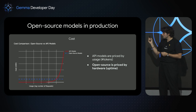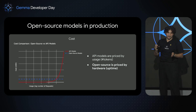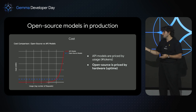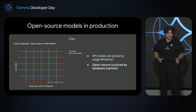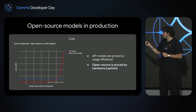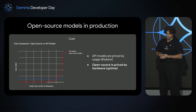On the cost side, API models are usually priced by number of tokens, while open-source models are priced by the hardware you're running the model on. So if you are having intensive usage, running your model on hardware is becoming much more cost-efficient.